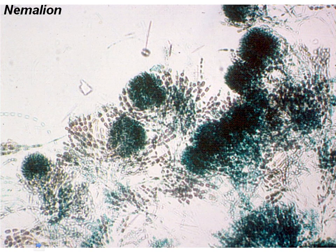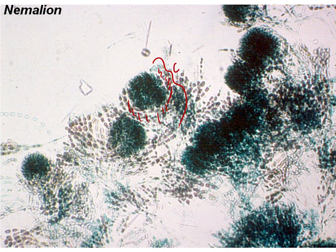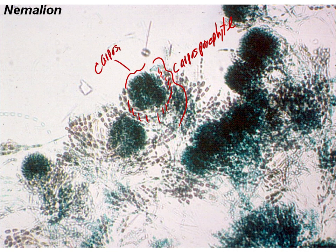Here's another genus — we will not see this one in lab. In this case you can see there are some sterile cells, which are also present but less coherent in the carposporophyte. That lets us see the center part, which is where the carposporangia would be — showing some variation in the structure of the carposporophyte in a different genus.